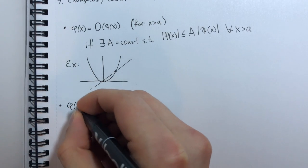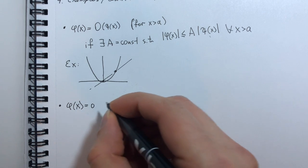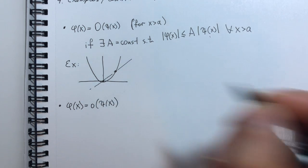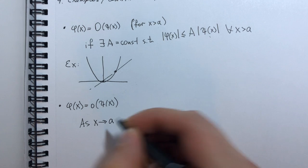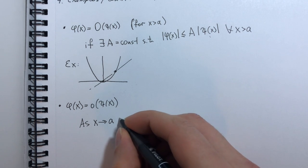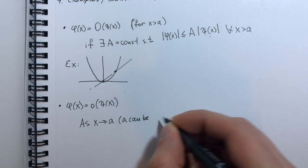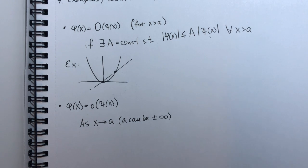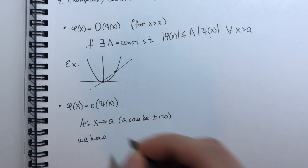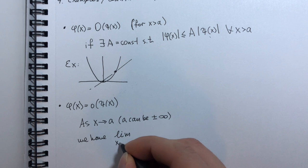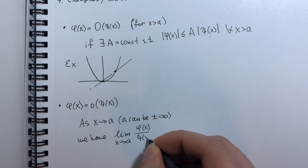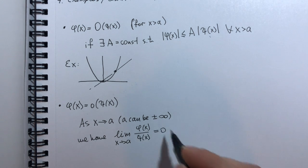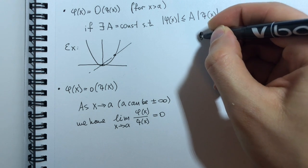We can also have that phi of x is equal to little o of xi of x, and this means that as x tends to some limit a, by the way a can be plus or minus infinity, we have that the limit of phi of x over xi of x is 0 as x tends to A.